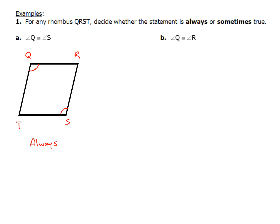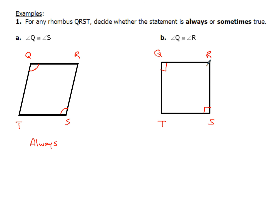Now for angles Q and R, it gets tricky. Consider a picture where angle Q is a right angle — then angle S is also a right angle. Since consecutive angles in a parallelogram must be supplementary, angle R would also be a right angle, as would angle T. So angle Q and angle R would be congruent only sometimes — when one angle is 90 degrees.